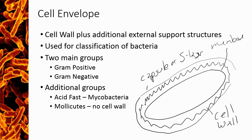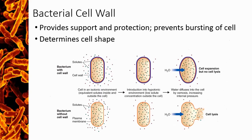There are two main groups based on the cell wall composition: gram-positive cells and gram-negative cells. Besides those two main groups, there are also additional groups consisting of acid-fast bacteria and bacteria that don't contain a cell wall at all. Similar to plant cells, the function of the bacterial cell wall is to provide support and protection to the cell.